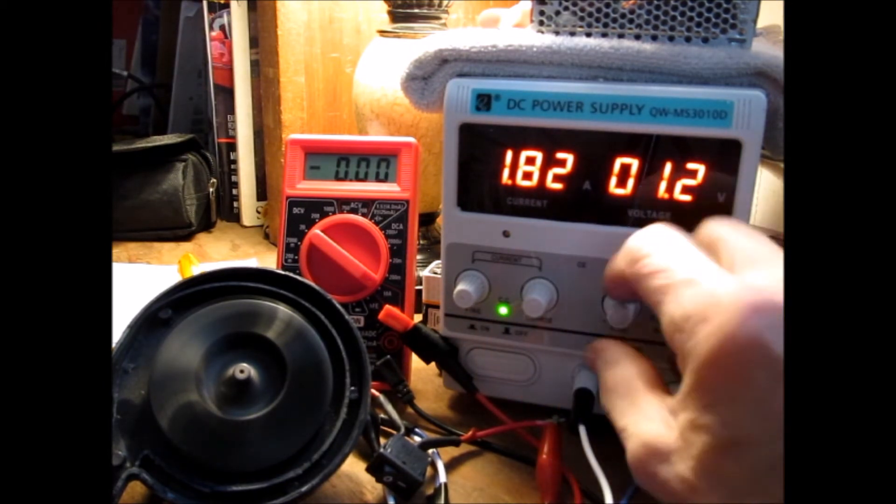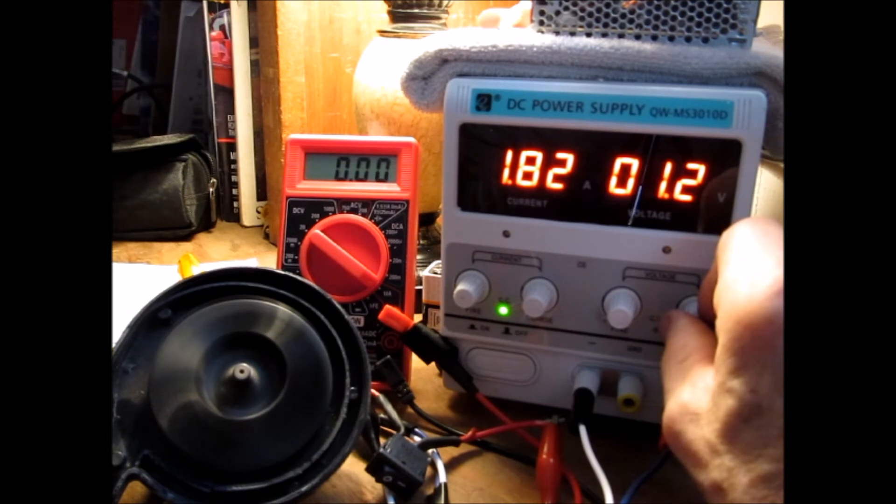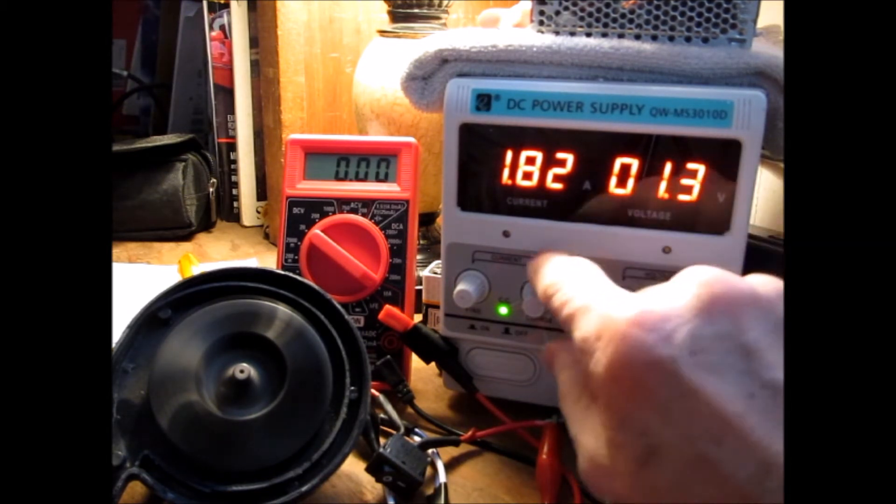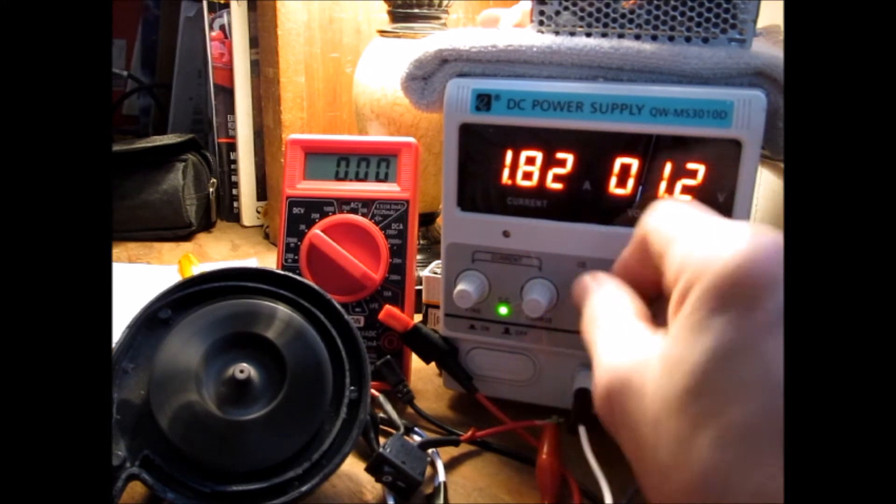On constant current, you can turn the voltage all the way as high as you want and it's still running on the current.